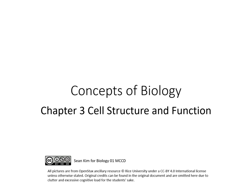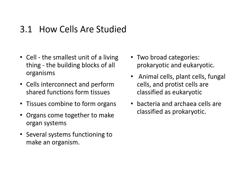We'll be discussing chapter 3, cell structure and function. So how are cells studied? The cell is the smallest unit of living things — the building block of all organisms. Cells interconnect and perform shared functions to form tissues, then tissues form organs, and organs come together to make an organ system. We have many organ systems, and such systems functioning together make an organism.